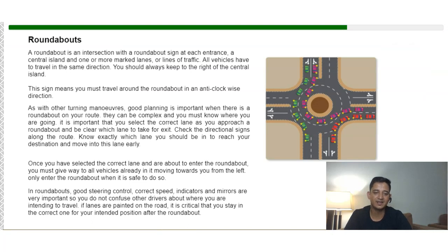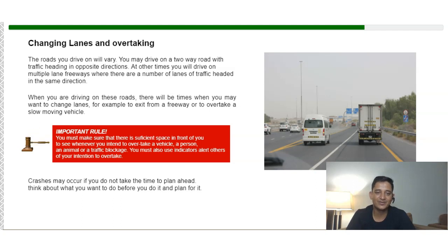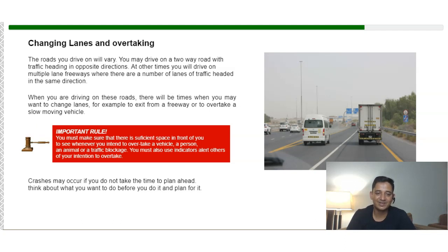In a roundabout, good steering control, correct speed, use of indicators, and mirror checks are very important so you do not confuse other drivers about your intended direction. When changing lanes or overtaking, you may be driving on a two-way road or a multi-lane freeway. There will be times when you need to change lanes — for example, to exit a freeway or to overtake a slow-moving vehicle. The key rule is to ensure there is sufficient space in front of you before you intend to overtake.